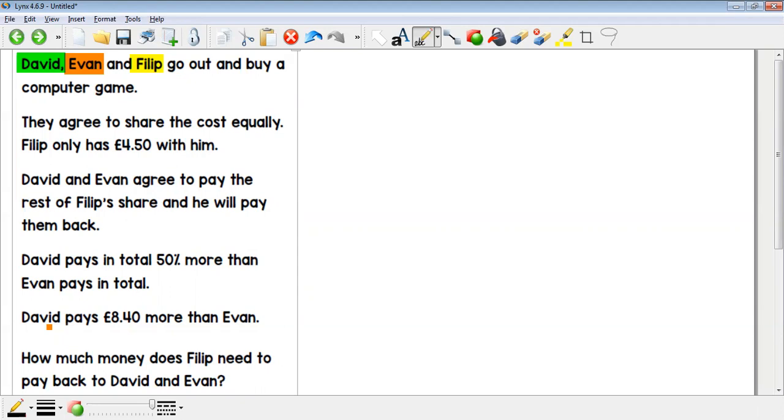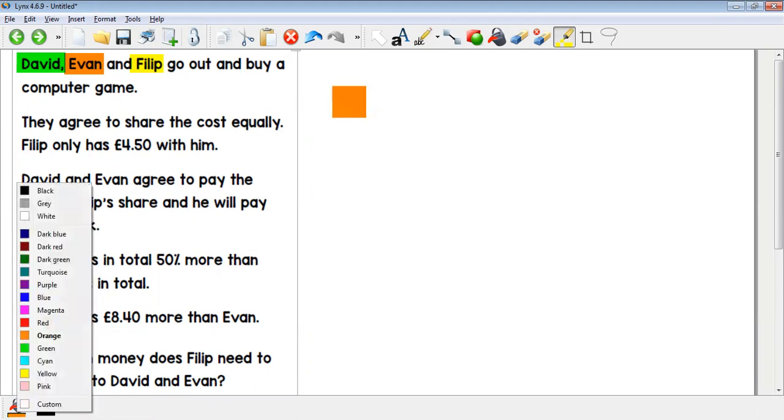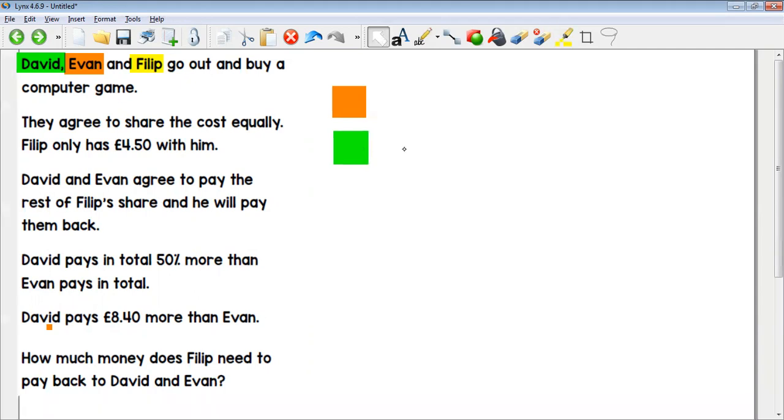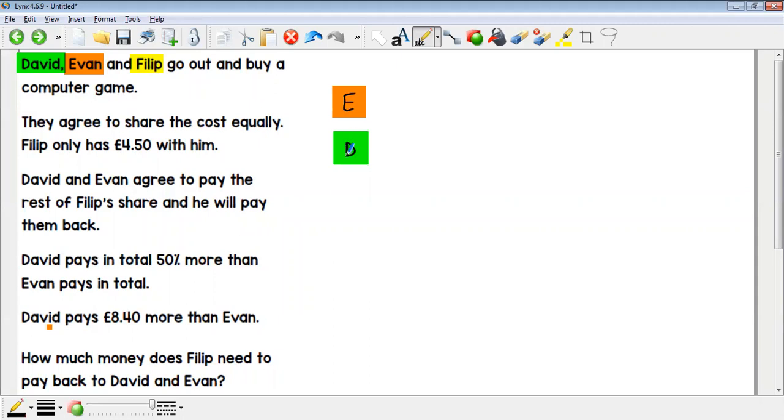That's fine. David pays in total 50% more than Evan pays, so I'm going to need my colors again. We've got Evan and then we've got David, so David is slightly more than Evan. Evan is Evan. Now what we need to do is think about what David is in relation to Evan, and he's paid 50% more, so he is basically an Evan and then half an Evan.